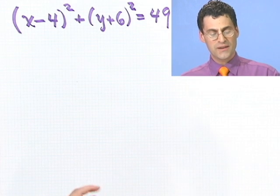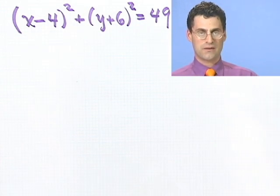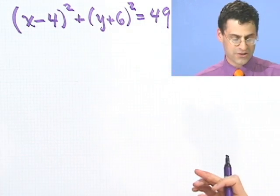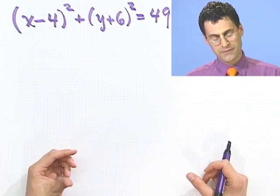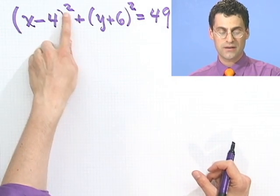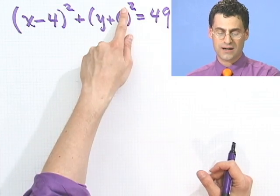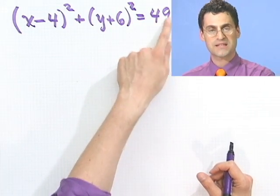Actually, I look at that and I say, you know, that sort of has a circly kind of feel to it. And what gives it that circly kind of feel? Well, what I feel is, I see stuff with x's in it squared plus stuff with y's in it squared, and it equals something that's positive.